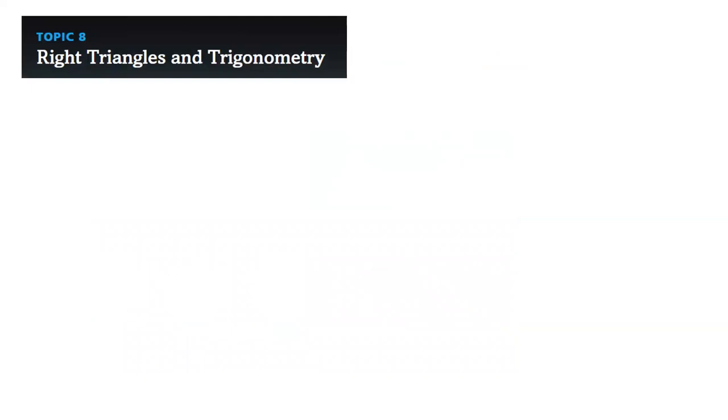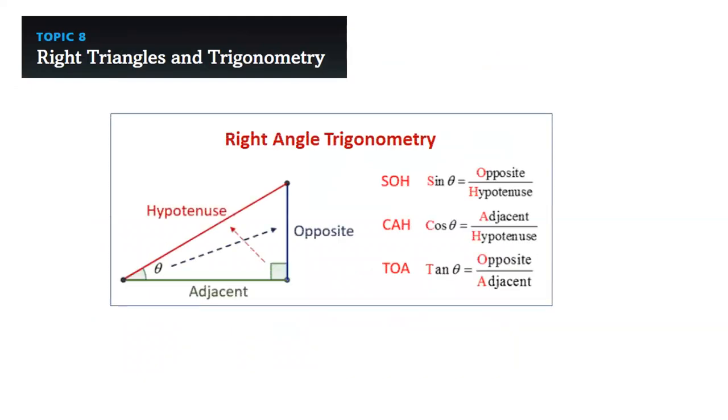Topic eight is about right triangles and trigonometry. Trigonometry is a vast field in geometry, but we will take it in details and briefly. So we'll discuss the hypotenuse, the adjacent, the opposite, how to label them first.